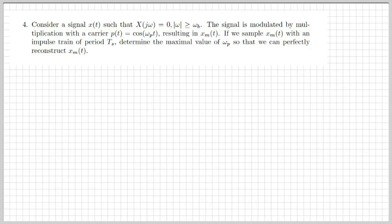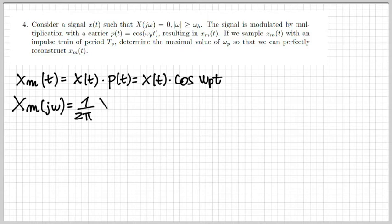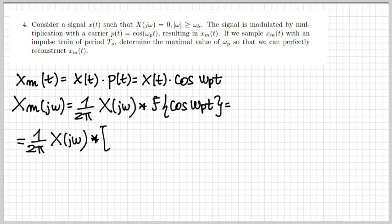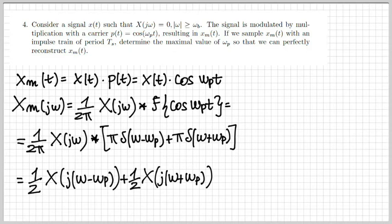Next exercise: we're given a signal x(t) with Fourier transform zero outside a certain interval, then we modulate it by multiplying by a cosine, and sample the result. The modulated signal xm(t) = x(t)·cos(ωp·t) has Fourier transform given by X(jω) convolved with two deltas — yielding two replicas of the original spectrum centered at ±ωp, each scaled by one half.